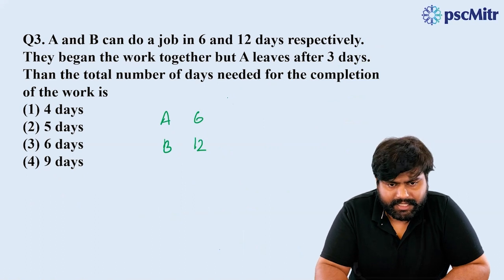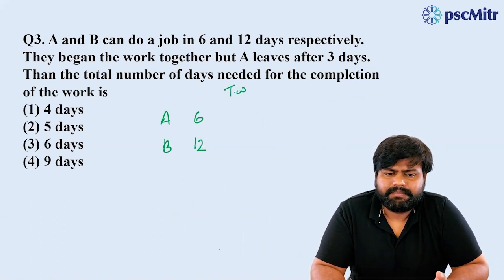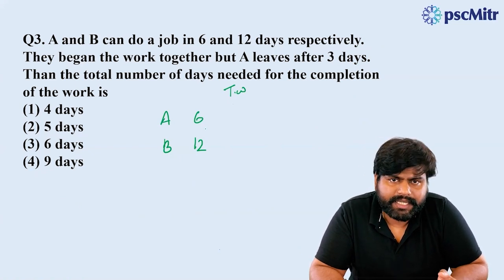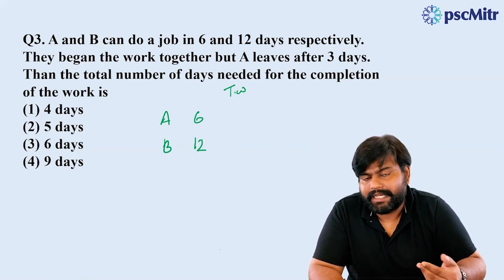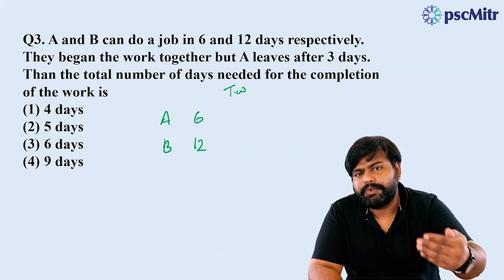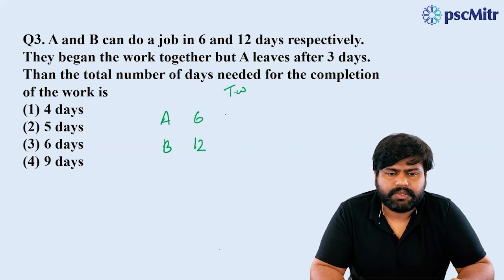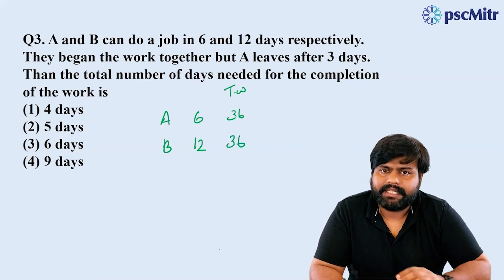Where is the total work? One is 10 and B is a multiple. I will put the same number into the two, put it into the three, and put it in total work. I will say that the total work is done.